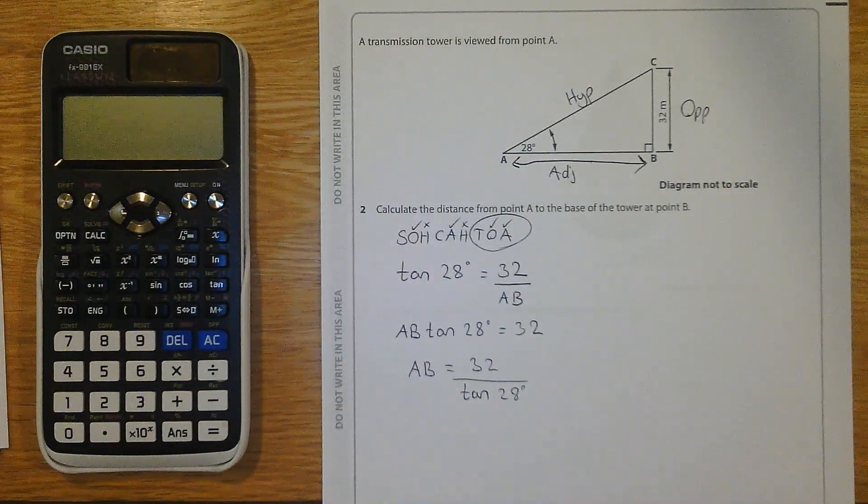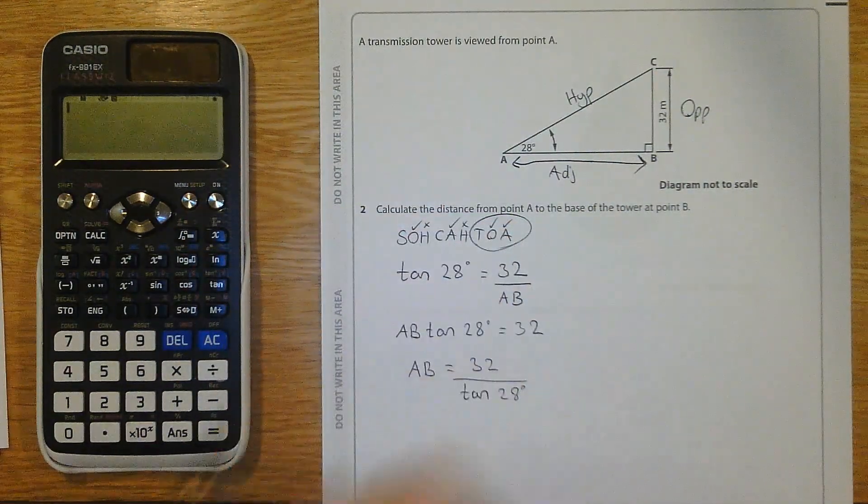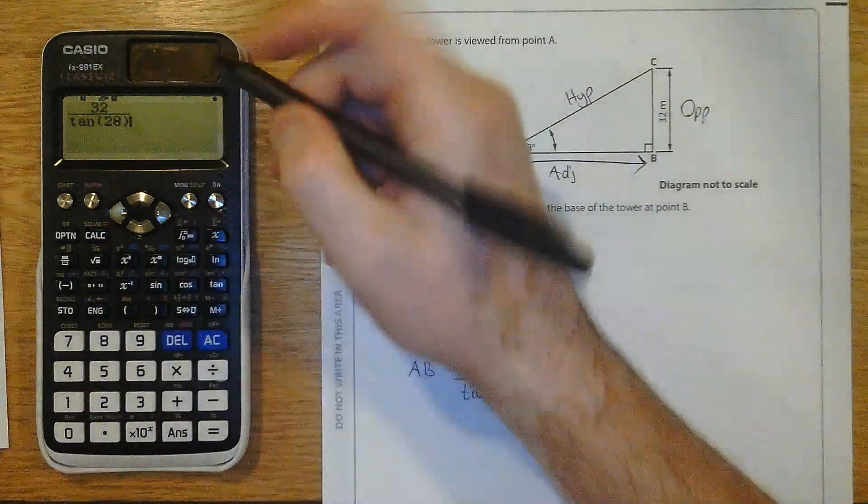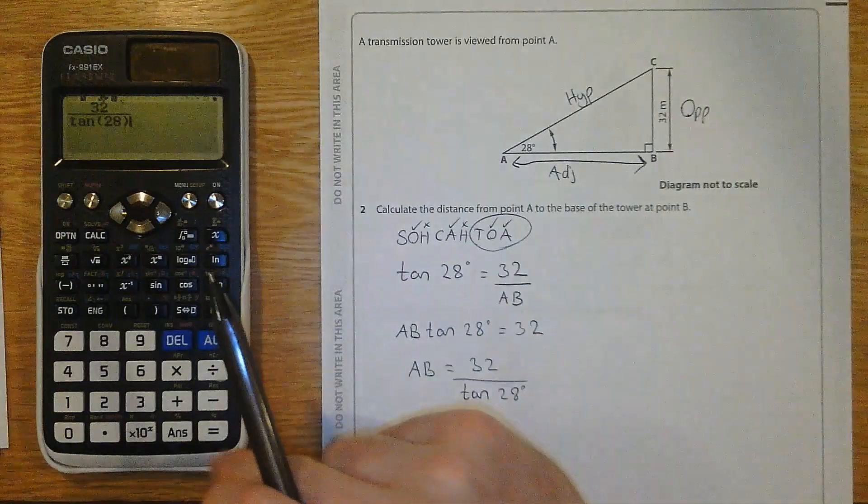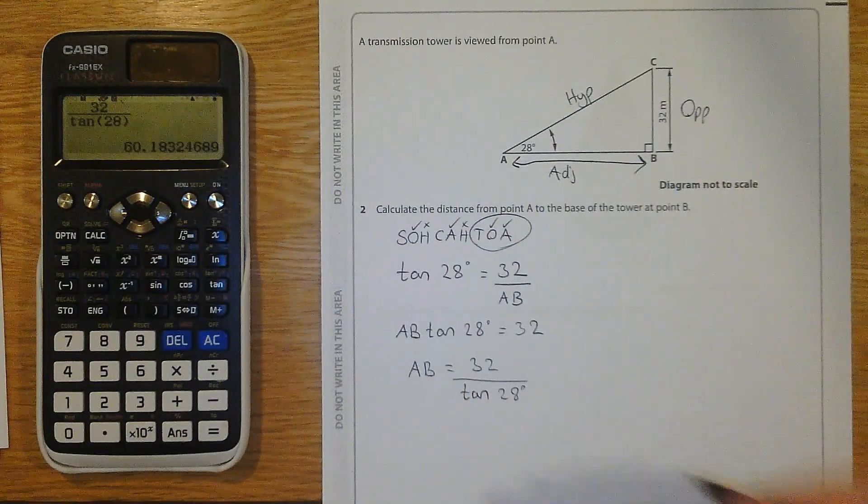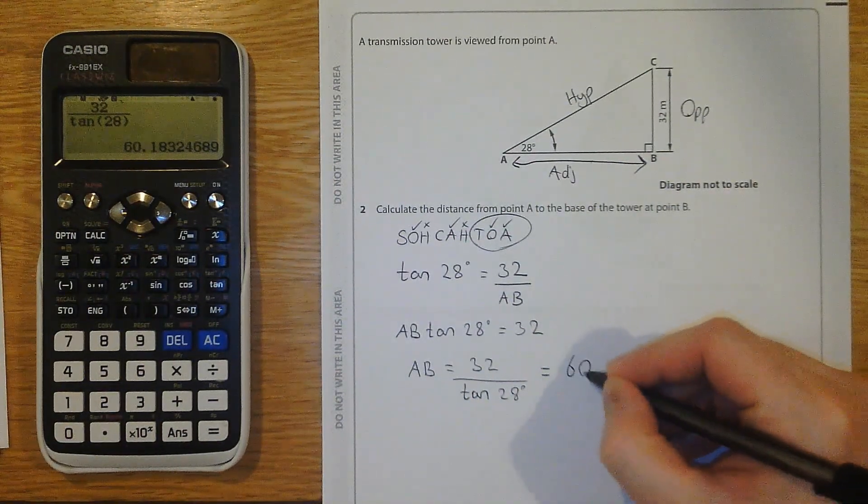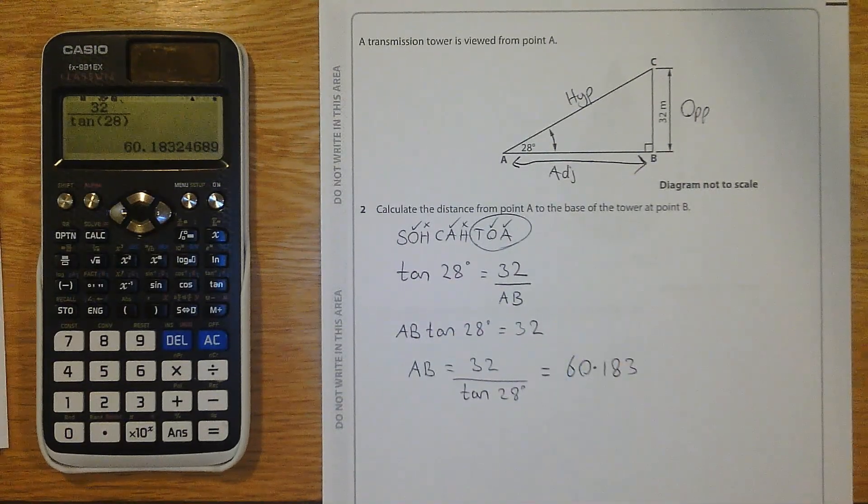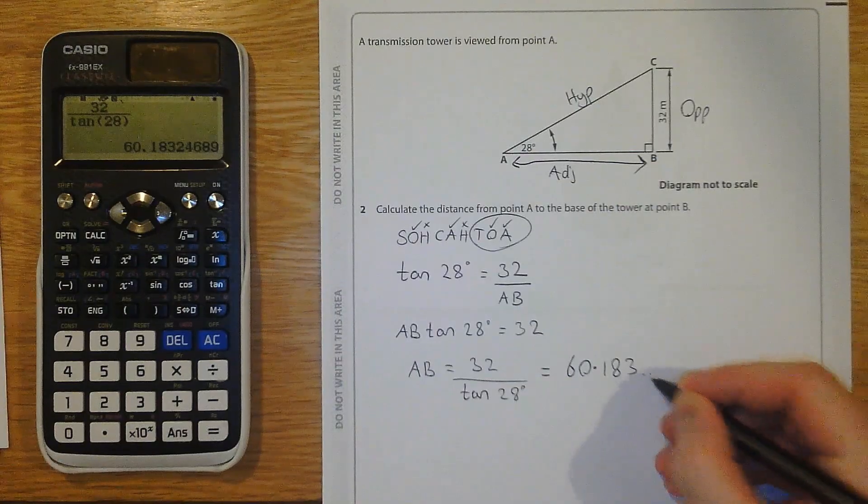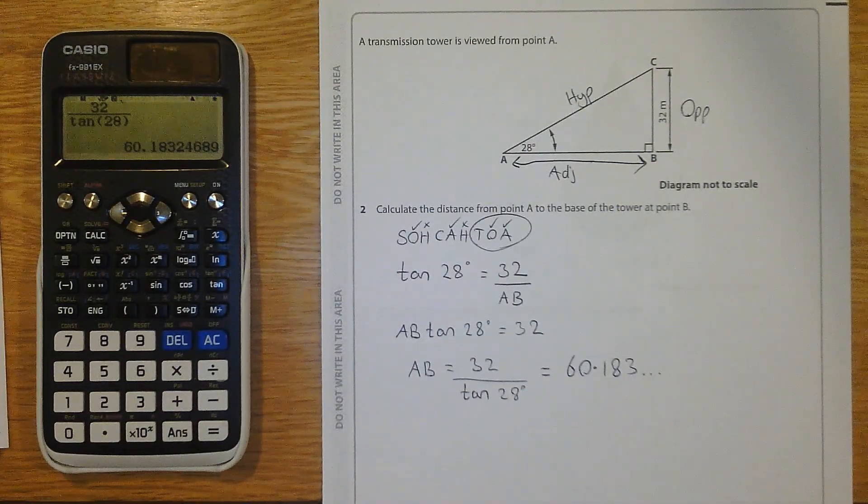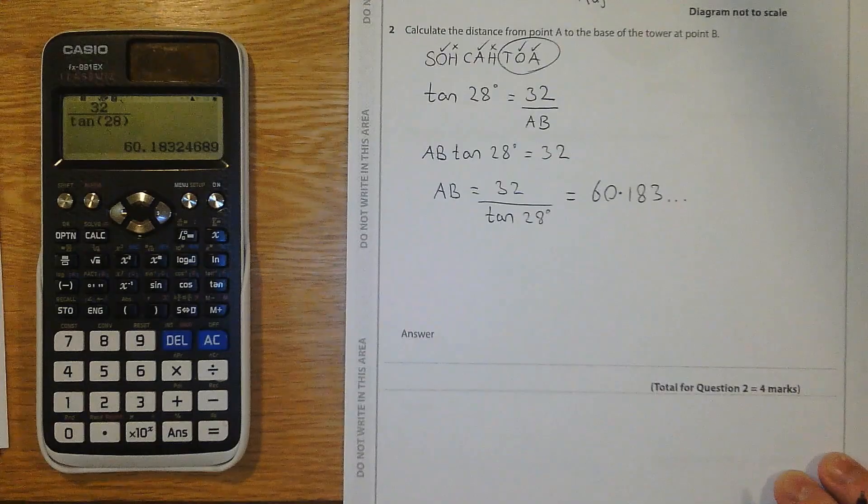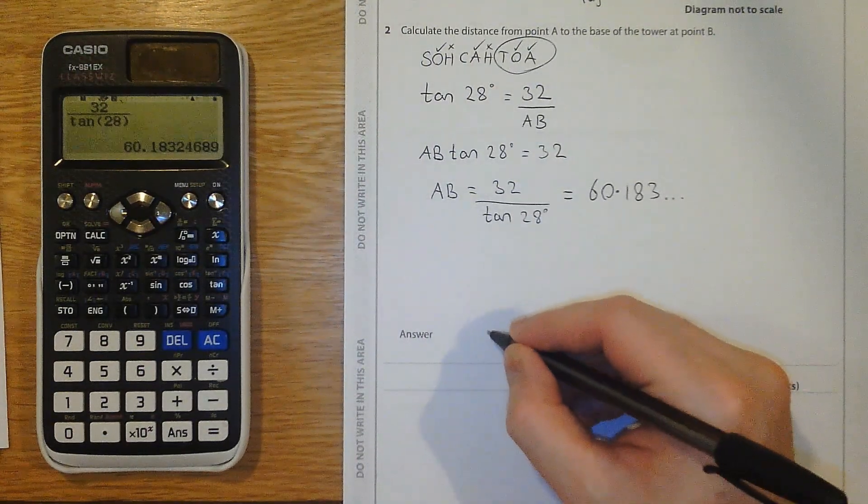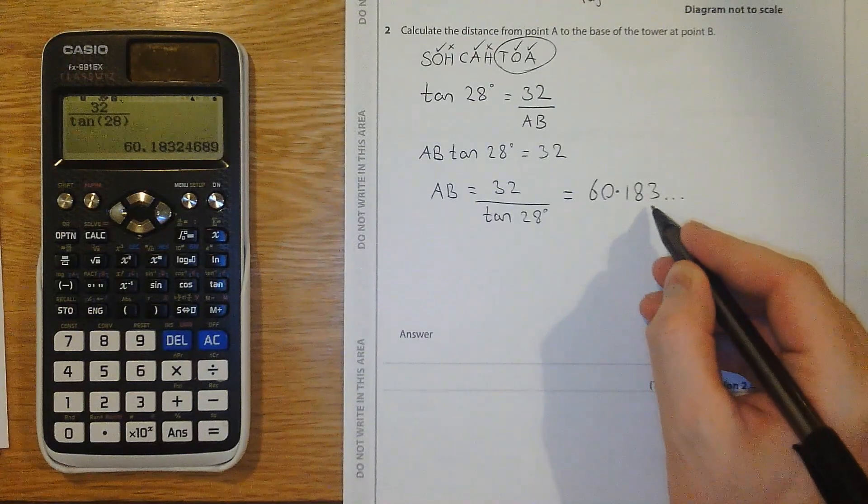Now that needs to go in my calculator. 32 tan 28. Make sure that I'm in degrees. And there we've got an answer. 60.183. Not exactly, but I'm just stopping there, because when I give my final answer on the answer line, I'm going to round and I'm going to say 60.2 meters. Sorry, not degrees.